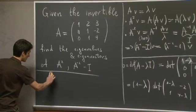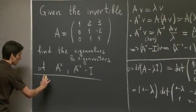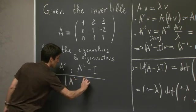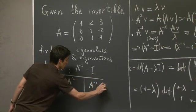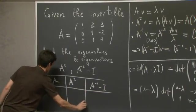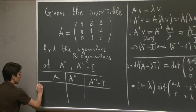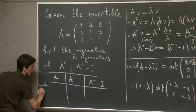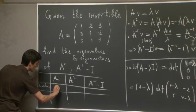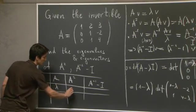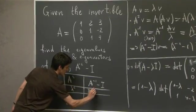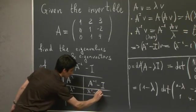So I'm going to put our results in a little table. So A squared and A inverse minus the identity. The first row will be eigenvalues. So if lambda is an eigenvalue for A, then we saw that lambda squared will be the eigenvalue for A squared.